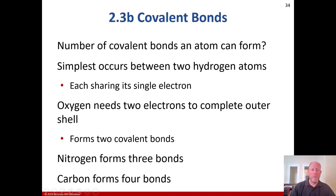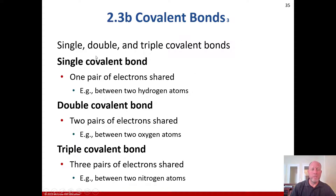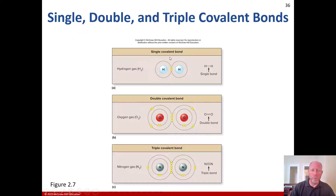For single, double, and triple covalent bonds: a single covalent bond is when one pair of electrons are shared; a double covalent bond is when two pairs of electrons are shared; and a triple covalent bond is when three pairs are shared. A great example of a single covalent bond is hydrogen gas, H2 — each hydrogen contributes one electron, forming a complete stable molecule by sharing their electrons to form two for each.